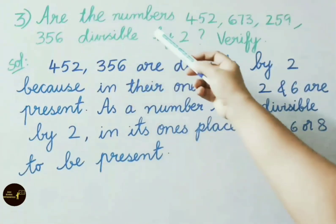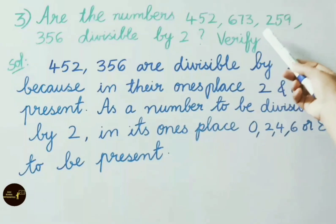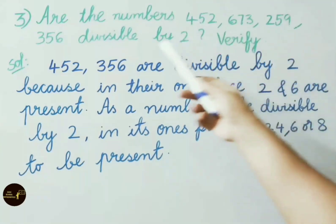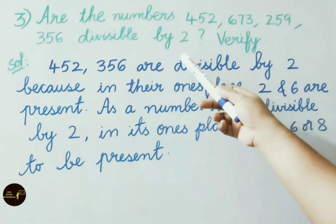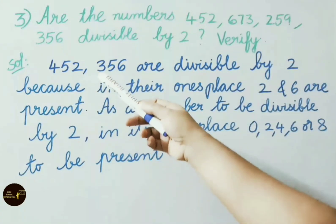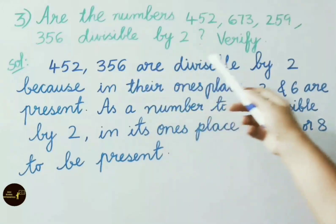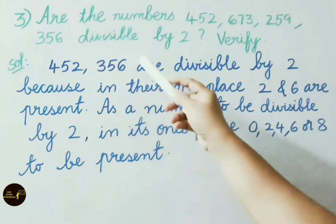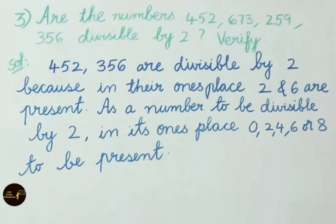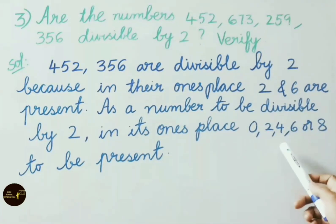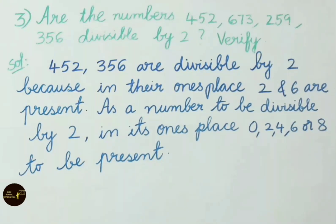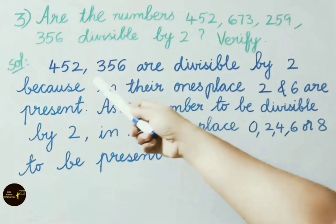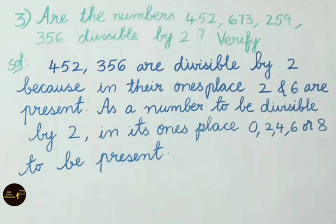Third question: Are the numbers 452, 673, 259, 356 divisible by 2? Verify. 452 and 356 are divisible by 2 because in their ones place 2 and 6 are present. We know the divisibility rule for 2: a number to be divisible by 2, in its ones place 0, 2, 4, 6 or 8 must be present. Now let us do actual division and verify whether 452 and 356 are divisible by 2 or not.